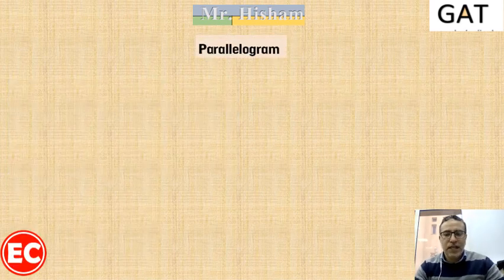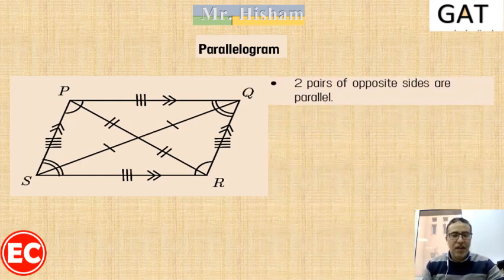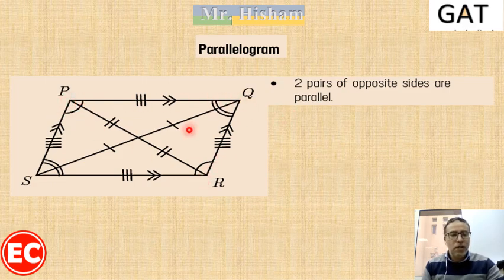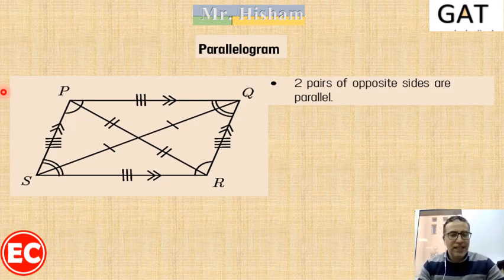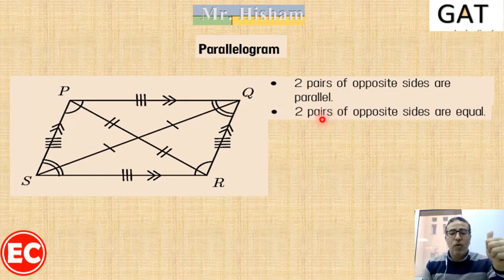The second quadrilateral is the parallelogram. A parallelogram is a quadrilateral with the following properties. First, two pairs of opposite sides are parallel: PQ is parallel to SR, and PS is parallel to QR. Second, two pairs of opposite sides are equal. So each pair of opposite sides are both equal and parallel: PQ is parallel and equal to SR, and QR is parallel and equal to PS.